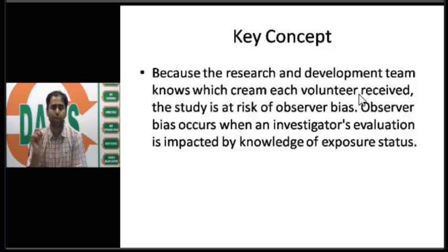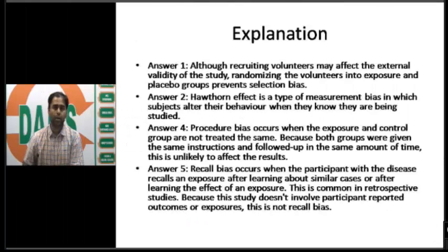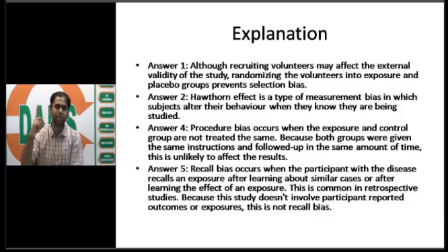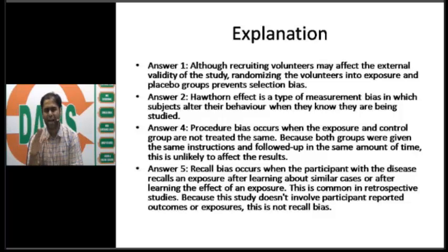The key message is: because the research and development team know which cream each volunteer received, the study is at risk of observer bias. Observer bias occurs when an investigator's evaluation is impacted by knowledge of exposure status. Why not procedure bias? Procedure bias occurs when the exposure and control groups are not treated the same. In this example, both groups were given the same instructions and followed up for the same amount of time.